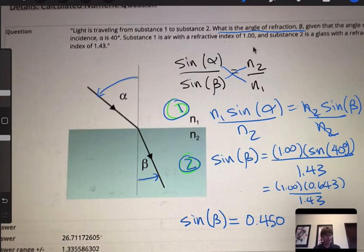I get 26.7 degrees, so beta equals 26.7 degrees. That's the answer. One hint: the larger the refractive index, the closer the angle or the smaller the angle will be.